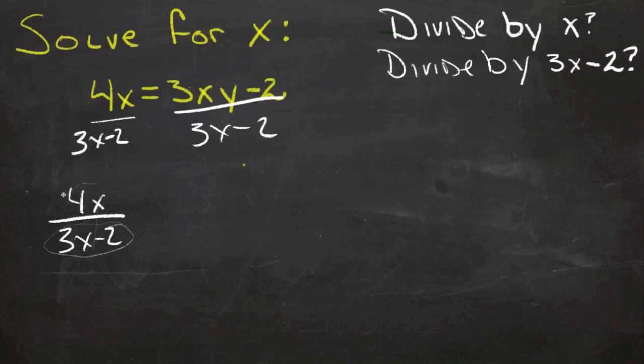This term is not a factor of this in any way, so we can't do anything with that right now. So then over here, we'll have 3xy minus 2 over 3x minus 2. Now, there isn't anything common between 3xy and 2, so there's nothing I can factor out.